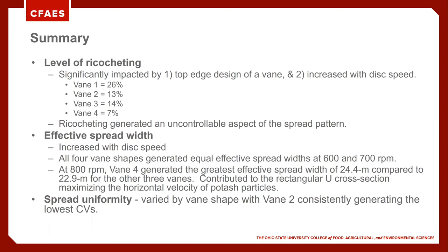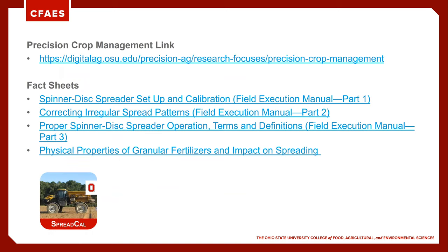That was the summary of what we learned. You can learn more at our digital ag website, specifically our precision crop management page. We have four fact sheets dealing with spinner spreaders. One thing we're working on now is a new app called Spread Cow, being developed to support pan testing and calibration, making it more efficient and less time-consuming, plus able to log all that information for future use. Thank you.